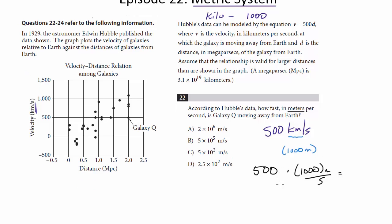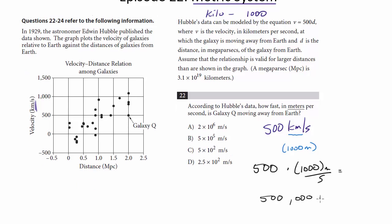then we can think of this really as 500,000 meters per second. So ultimately we can write this out as, as you might expect, 500,000 meters per second. So right away we can get rid of D and A because they don't have a five. So it comes down to B and C, and now we're dealing with a little scientific notation.